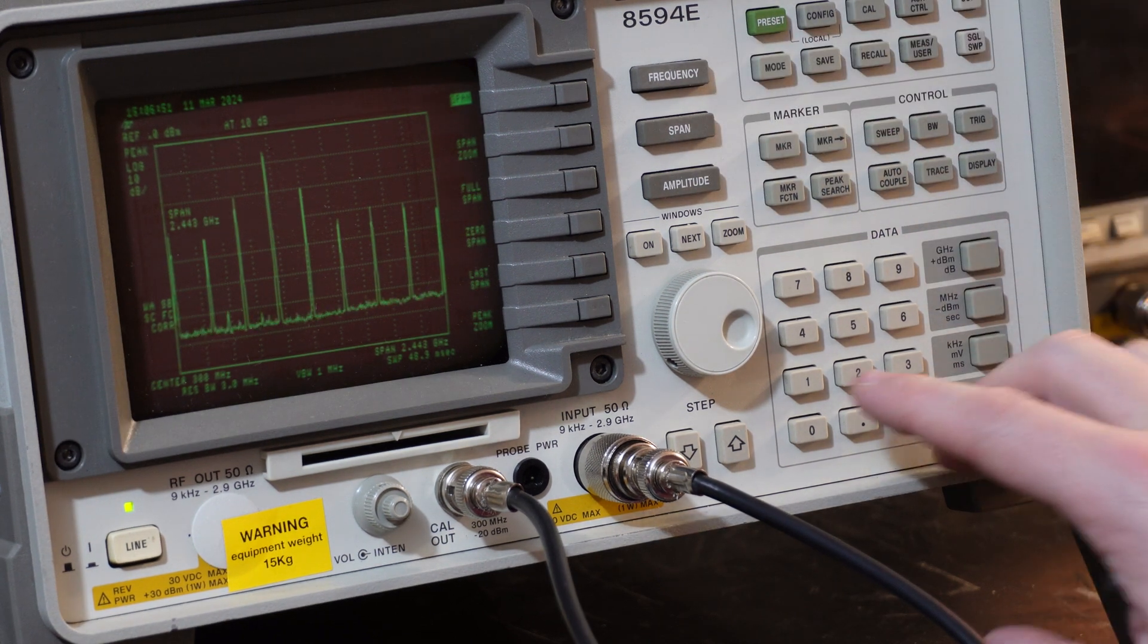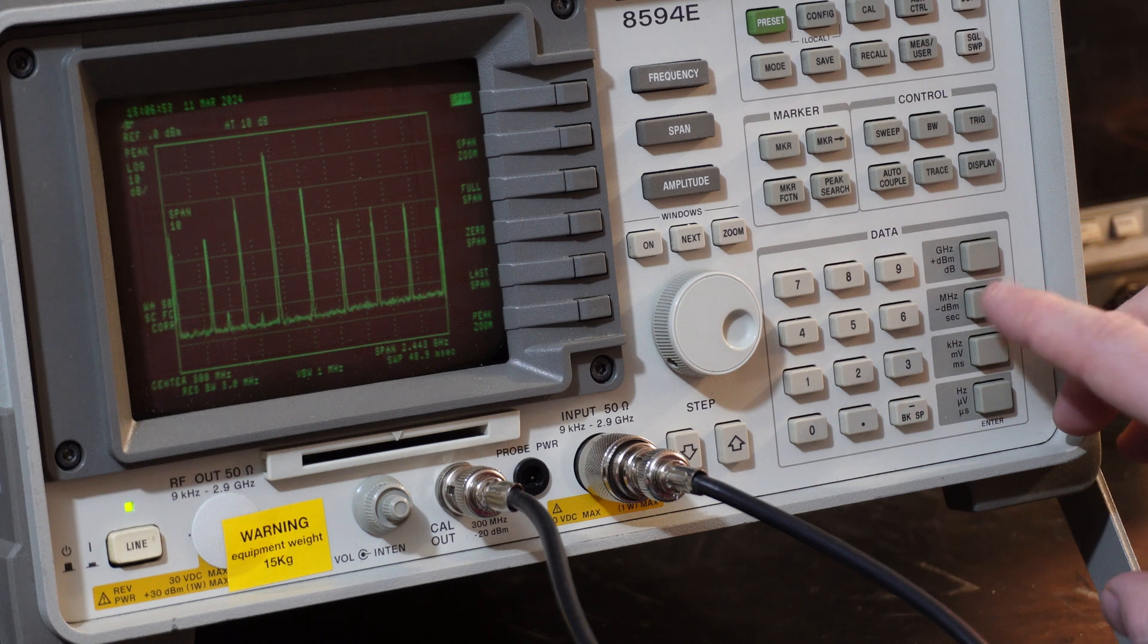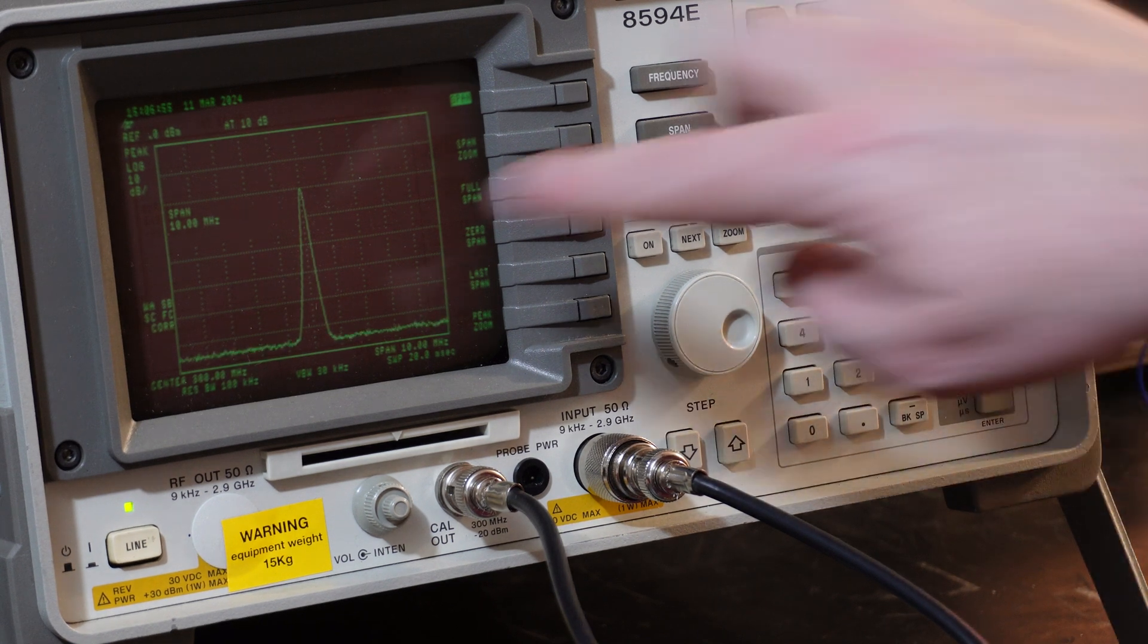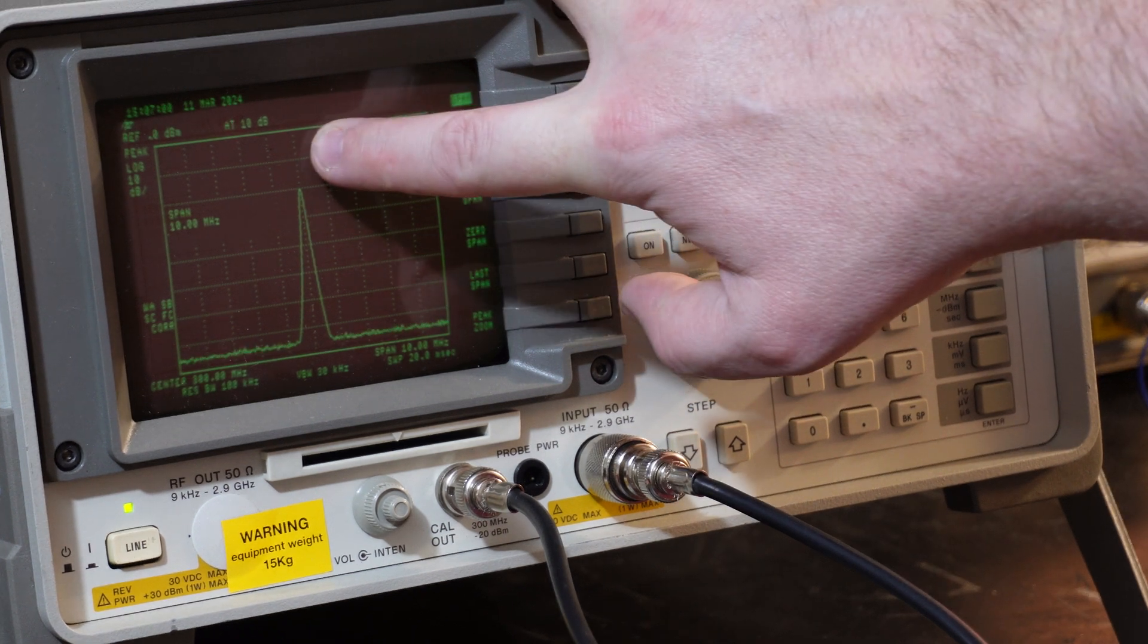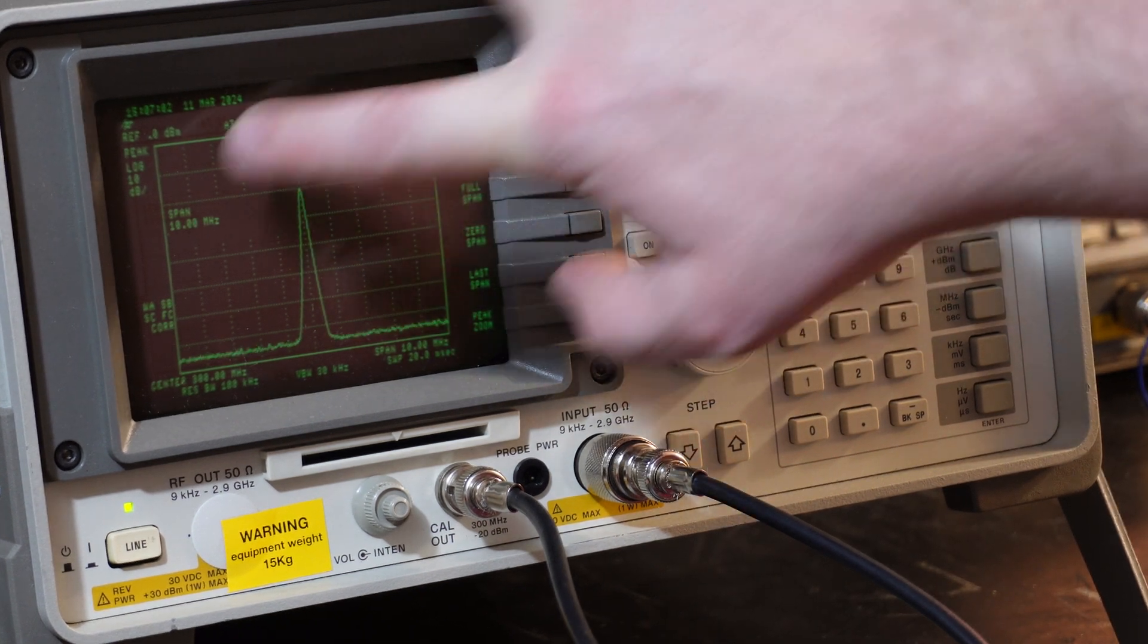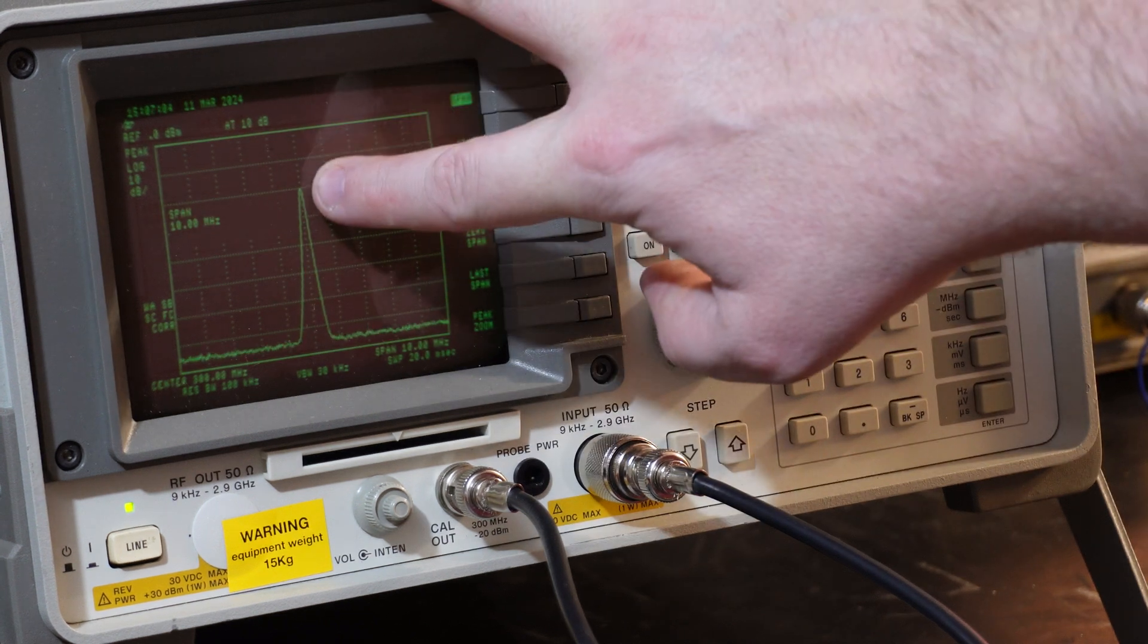Then let's put in span. We'll go for 10 megahertz span and we can see our nice signal there. We're down two blocks here, which would be 10 dB per scale, so it's at minus 20 dB.